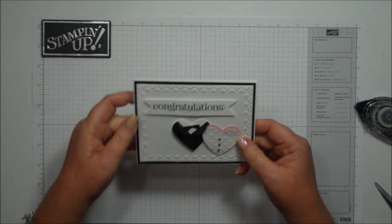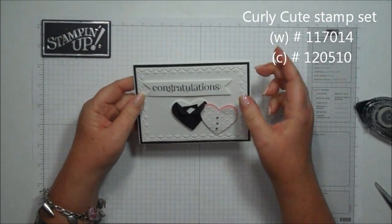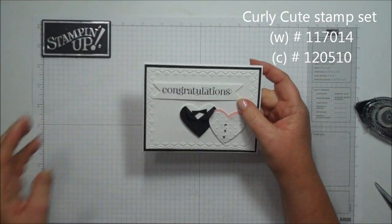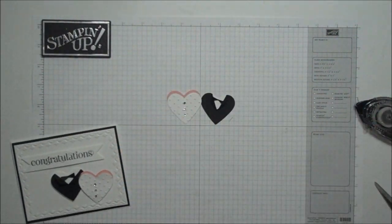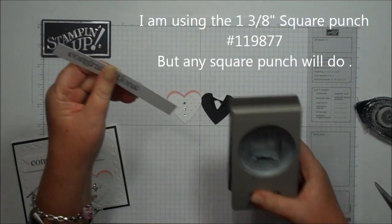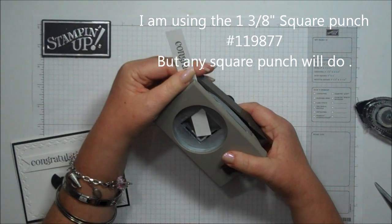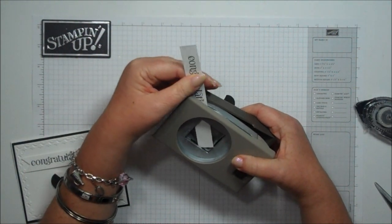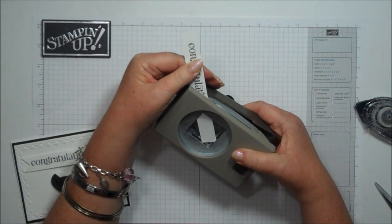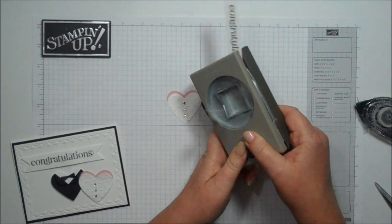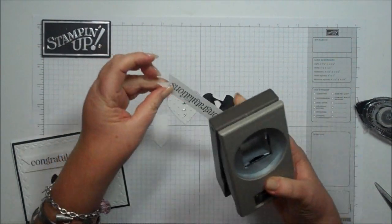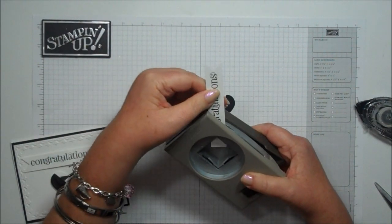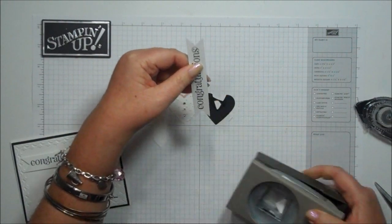So then on my finished card, I went ahead and used the Curly Cute stamp set, and it says congratulations. And what I did for that, I stamped the image, and then I took the square punch, and it doesn't matter the size, and I'm just going to line that up in the center of that corner, and then just punch. And you're going to make like a little banner.